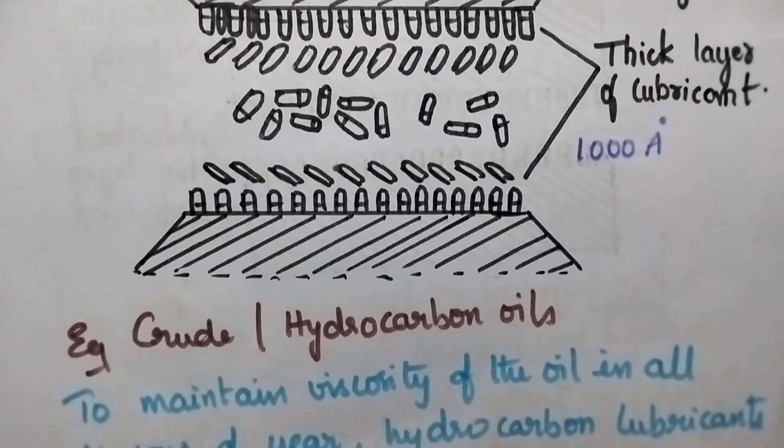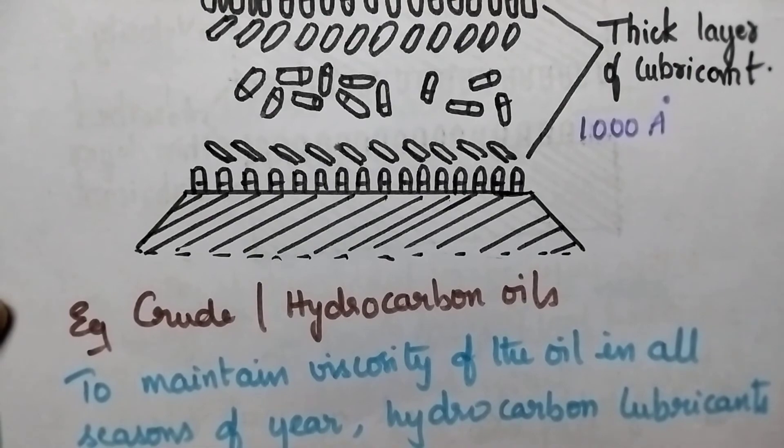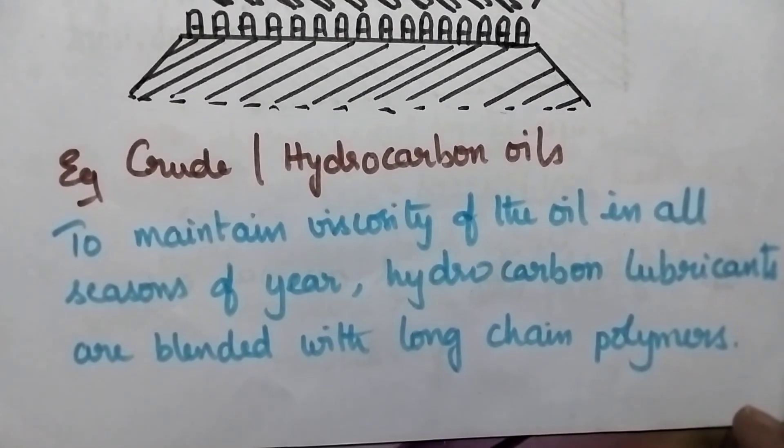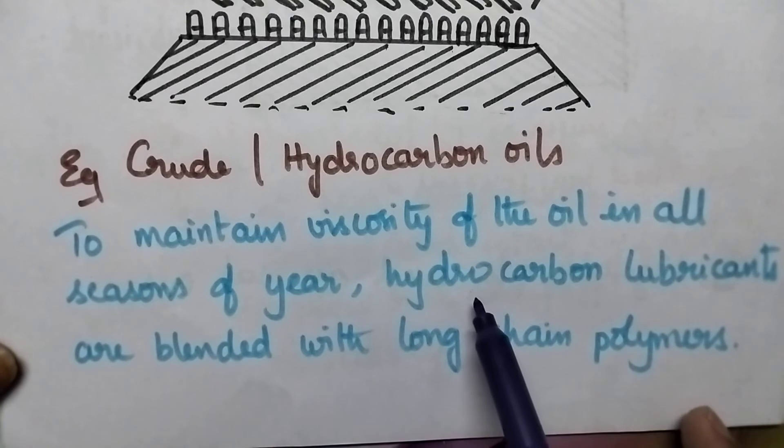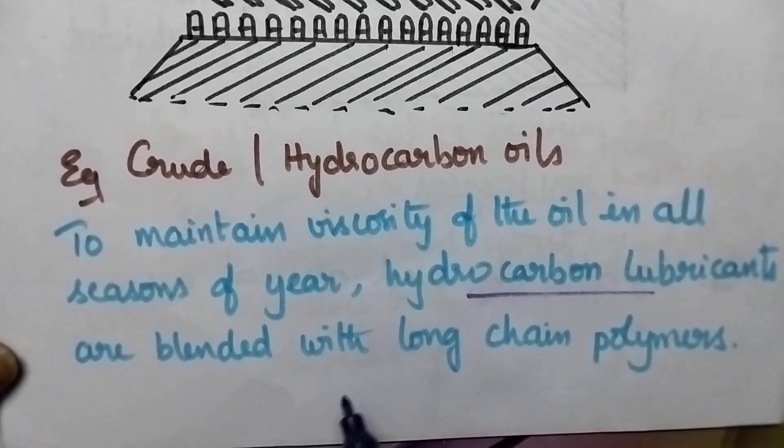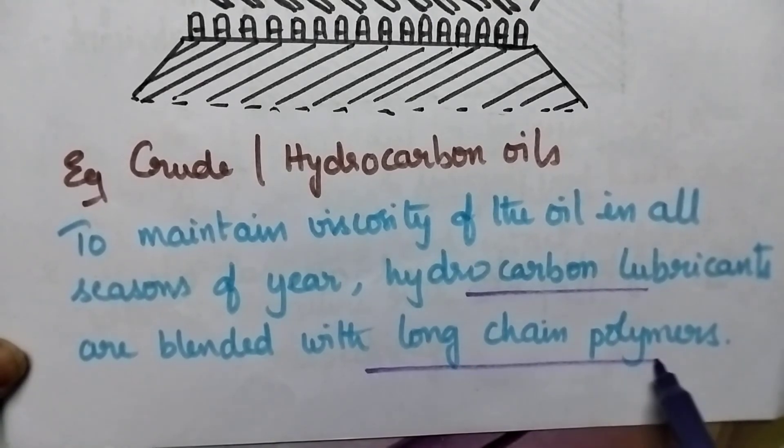Good examples for thick film lubrication include the use of crude or hydrocarbon oils. In order to maintain viscosity of the oil in all seasons of the year, hydrocarbon lubricants are always blended with long chain polymers.